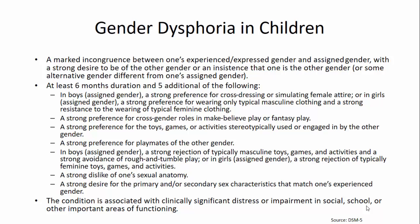In gender dysphoria in children, we need five of these criteria. In boys, a strong preference for cross-dressing or simulating female attire; in girls, a preference for more masculine clothing. You also see a preference for taking the other gender's roles in play behaviors, fantasy play, and make-believe, as well as a preference for another gender's toys, games, and activities. There's a preference for playmates of the other gender and a strong dislike of one's sexual anatomy as the child becomes aware of it. This is associated with clinically significant distress or impairment in social, school, and other important areas of functioning.